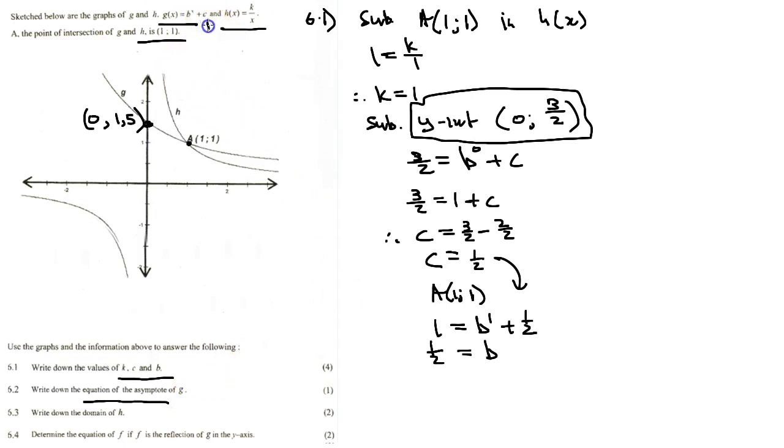We just solved for the value for c which is equal to 1/2. Therefore the answer for 6.2, the asymptote equation, will be y equals 1/2.